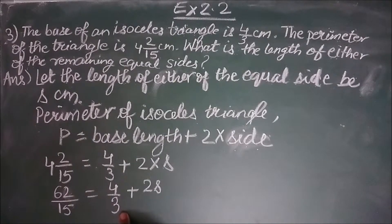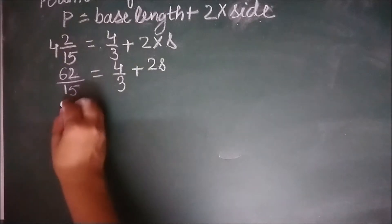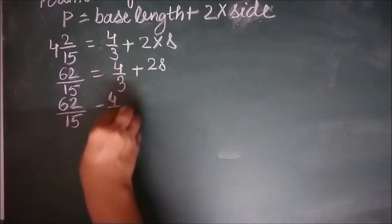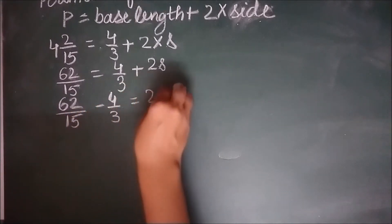62 by 15 equal to 4 by 3 plus 2 into S or 2S. So 4 by 3 is an addition here. When it goes to the left hand side, it gets subtracted. Why am I moving it to the left hand side? Because my variable S is already on the right hand side. So let it be on the right hand side. Let us move all the constants to the left hand side. So 62 by 15 minus 4 by 3 equal to 2S.